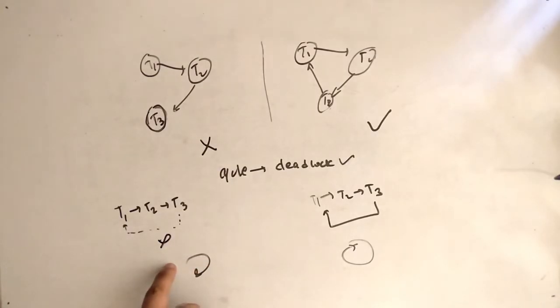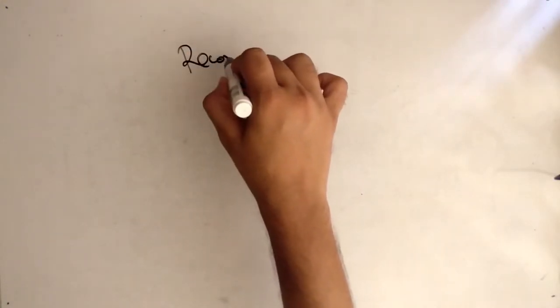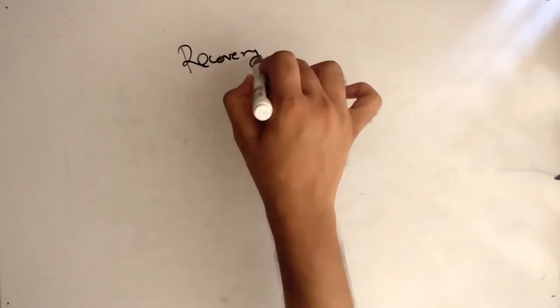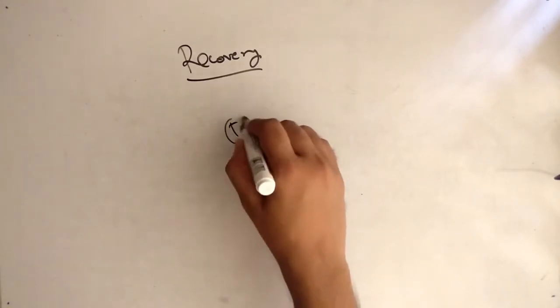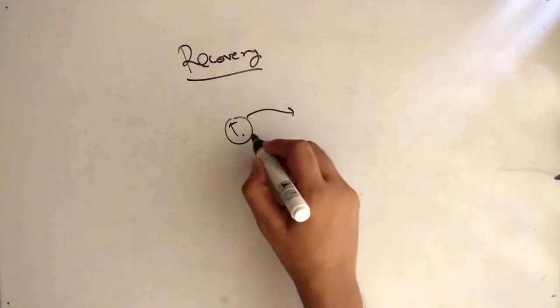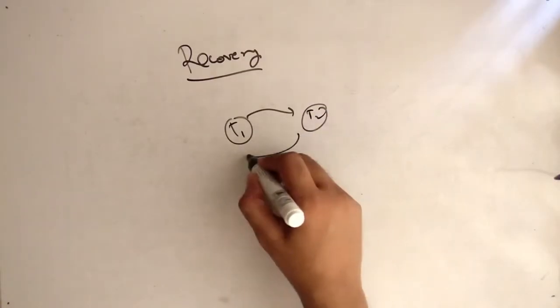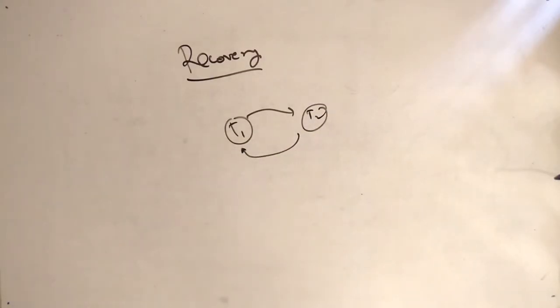So if a cycle is present, the system is in deadlock. If there is no cycle — as you can see here — the system is not in deadlock; it is a deadlock-free system. Now let's see how we can recover. Recovery from deadlock: you know how to detect deadlock using the wait-for graph, but now the question is how we can recover. We have the condition where T1 depends on T2 and T2 depends on T1.